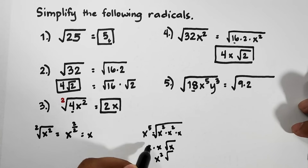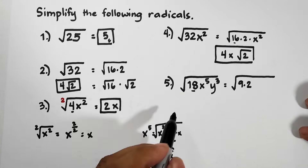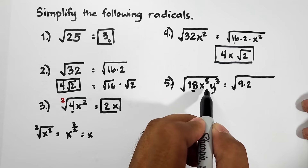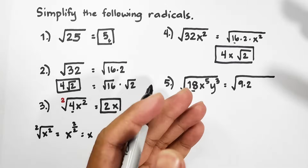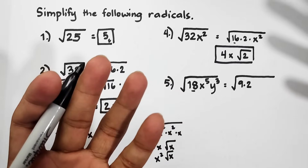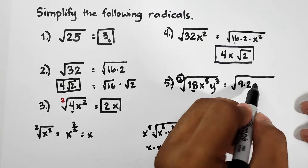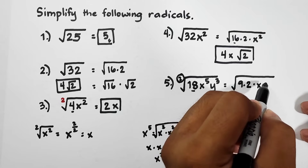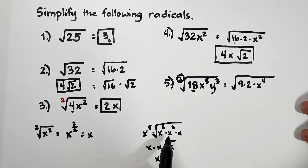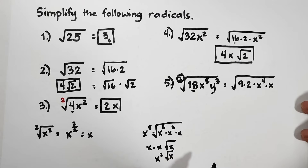When we try to get the square root of x to the 5th power, we factor the exponent so that one part is divisible by the index 2. So x to the 5th becomes x to the 4th times x, because x squared times x squared is x to the 4th, and we still have one remaining x. The square root of x to the 4th is x squared, and x remains inside the radical.